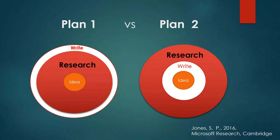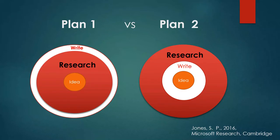Most researchers use plan number one: they have the idea, they do the research, then they write it. But the better way is plan number two — you have the idea, you write about it, then you go to do some research.